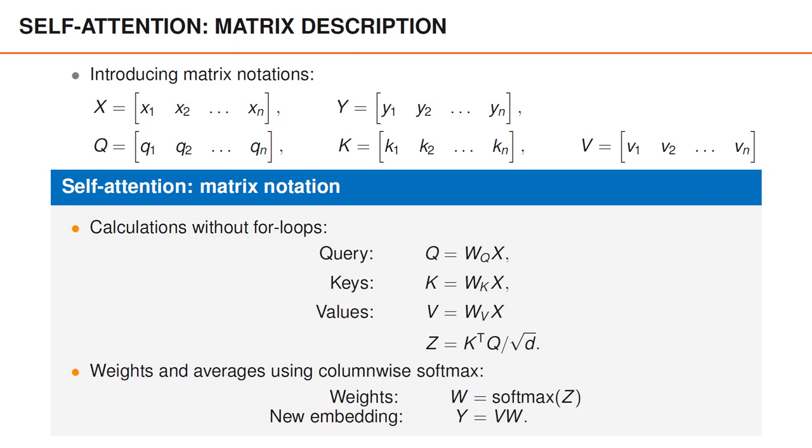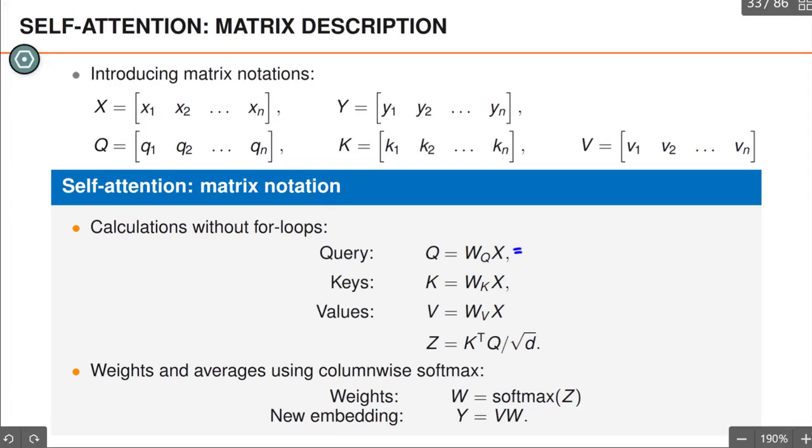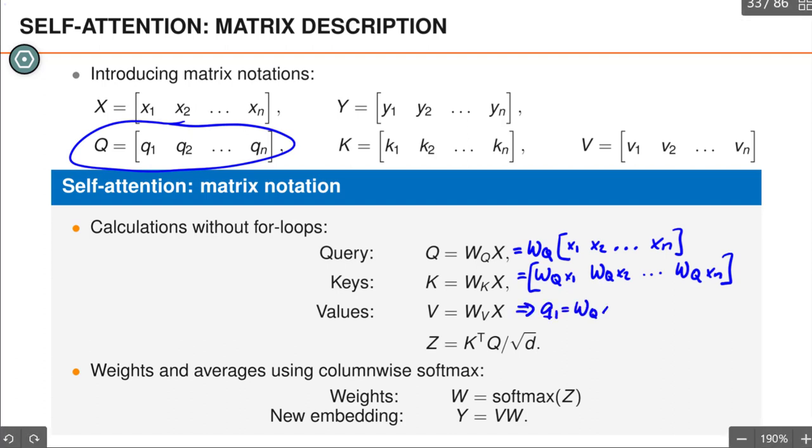Given this notation we can introduce all the query vectors using a simple matrix product wq times x. To understand why this is true we note that wq times x is wq times the matrix x1 to xn. Now the first vector of this product is simply wq times x1 the second vector is wq times x2 and so on. Given that q is q1 to qn this means that we arrive at the relations q1 is equal to wq times x1, q2 is equal to wq times x2 and so on which is precisely the expression that we had in the vector case. This means that we have simply obtained a more compact expression for the same thing. I will skip the arguments for keys and values since they are analogous.